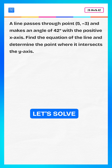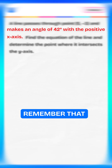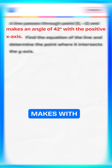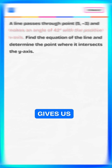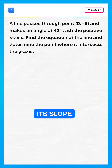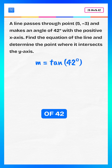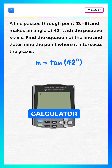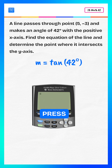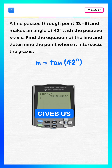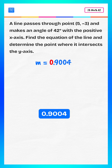Let's solve step by step. Remember that the angle a line makes with the positive x-axis gives us its slope, so the slope m equals tan of 42 degrees. Using the calculator, press tan of 42 degrees, then press enter — that gives us 0.9004.